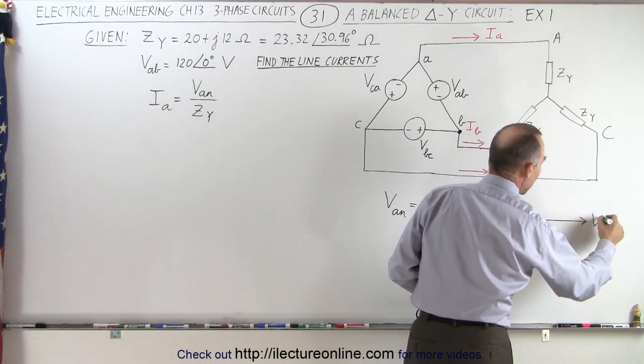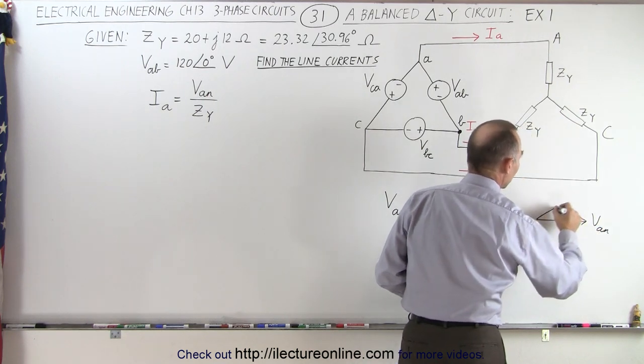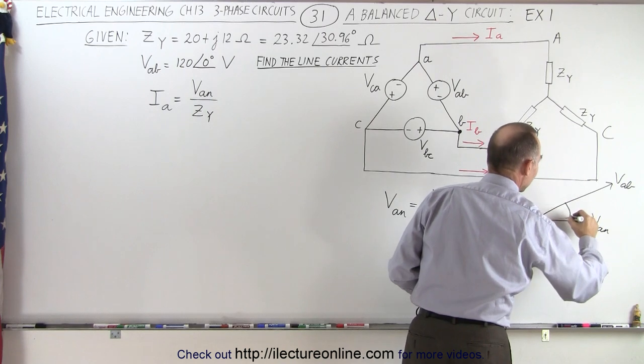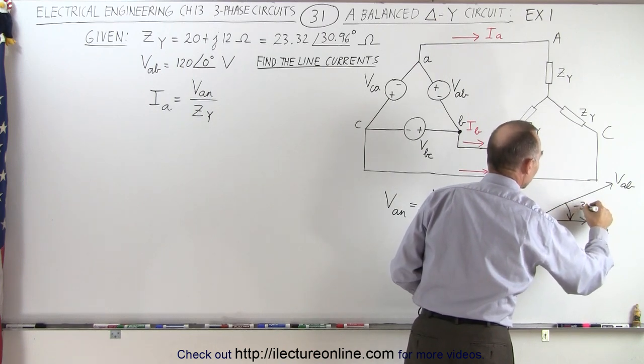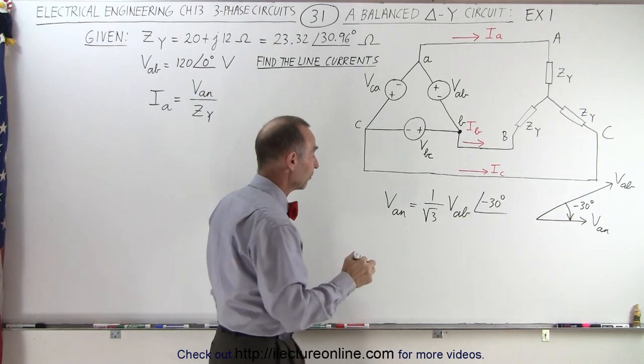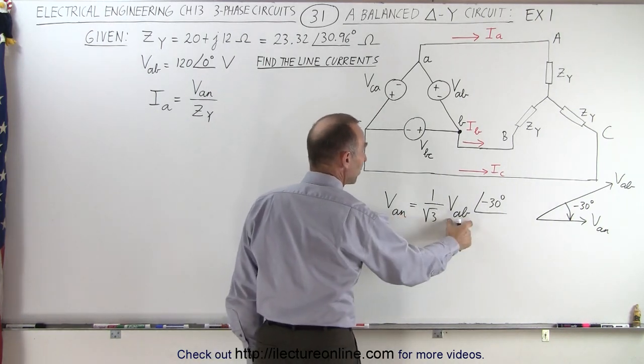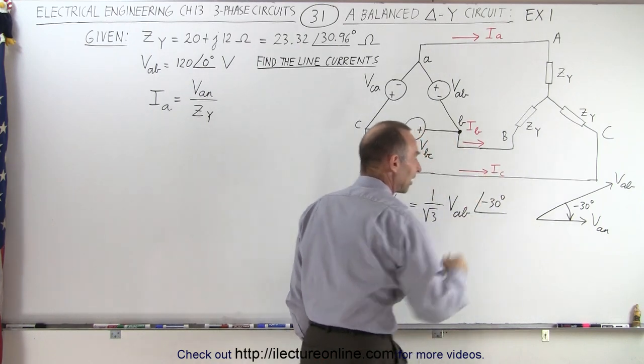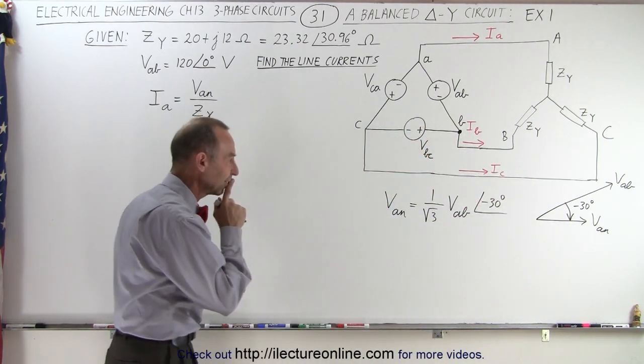Remember the diagram that we had. If this was Van, then this was going to be Vab with a phase angle difference of minus 30 degrees and a magnitude difference of the square root of 3. So therefore, we divide Vab by the square root of 3 to get the magnitude for Van and then we have a phase angle difference of minus 30 degrees.